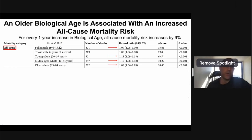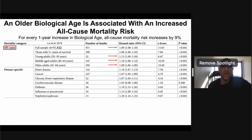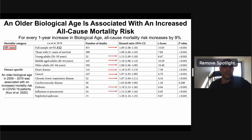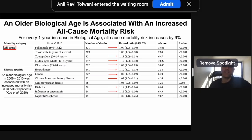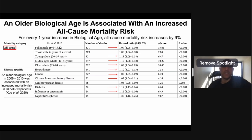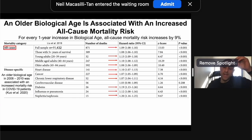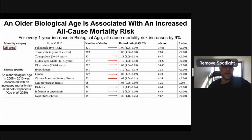It's not just all-cause mortality — we can break that down into disease-specific mortality. Having an older biological age using Levine's test was significantly associated with increased deaths from heart disease, cancer, lower respiratory disease, diabetes-related mortality, and deaths from influenza or pneumonia — but interestingly not cerebrovascular disease. An older biological age measured from 2006 to 2010 was also associated with increased mortality risk in COVID-19 patients up to 14 years later, and with increased risk of death from kidney-related issues including nephritis and nephrosis.